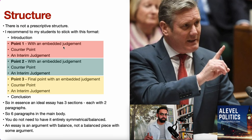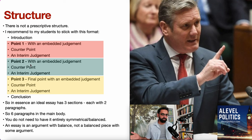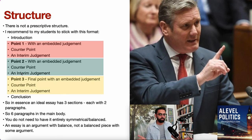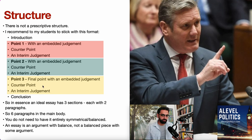An ideal essay consists of three sections, engaging with three points. In Rebecca's case, she was going to look at the economy, social issues, and law and order. Point one would be on the economy, point two on social issues, point three on law and order — and within each she would argue for and against.